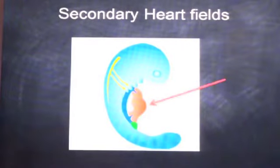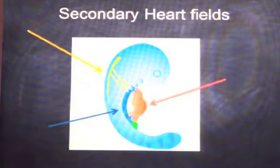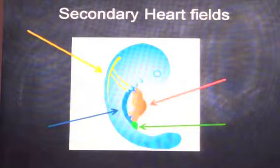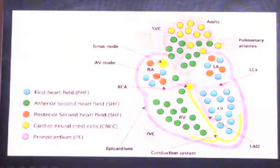The primary heart field forms the actual heart. The secondary heart field forms the major part of the RV and the outflow. The cardiac neural crest cells come from the notochord, follow the pharyngeal arches, and reach the outflow tract. The proepicardium forms the coronary and epicardial structures. In the diagram, blue denotes the primary heart field, green the secondary, yellow the cardiac neural crest — which also forms the conduction system — and pink the epicardium from the proepicardium.